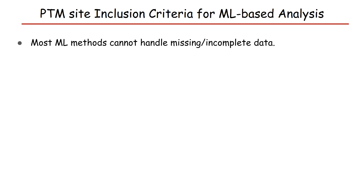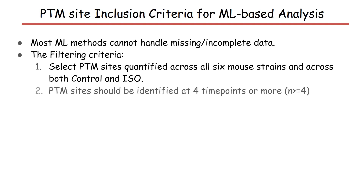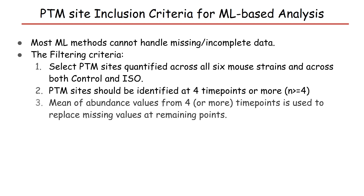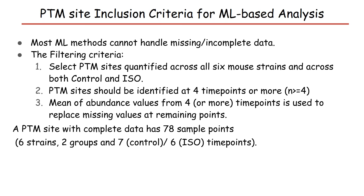Most machine learning methods cannot handle missing and incomplete data. Therefore, we use the following filtering criteria before applying machine learning methods. We select PTM sites which are quantified across all six mouse strains and across both control and ISO. The PTM sites should be identified at four or more time points, and the mean of abundance values from four or more time points is used to replace missing values at remaining time points. A complete PTM site will have 78 sample points — six strains, two treatment groups, and seven time points for control and six for ISO.